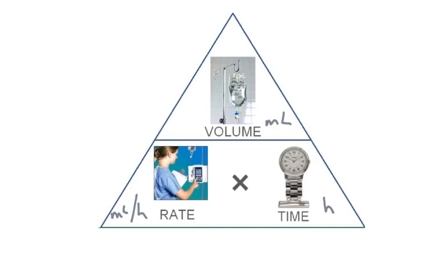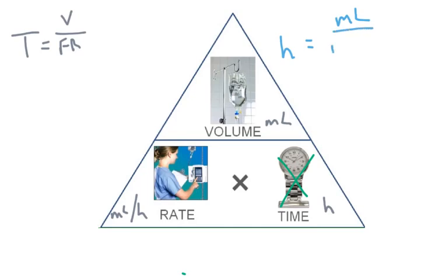So we're looking for the infusion time. When you're looking for the infusion time, you're going to take the volume — because what you do basically is mark out what you're looking for. You're looking for time, so that means volume over flow rate, volume divided by flow rate. I much prefer thinking about it in units: if I'm looking for hours, I'd be doing milliliters divided by milliliters per hour. Both of these work — it's whichever you prefer.